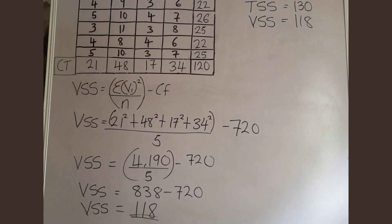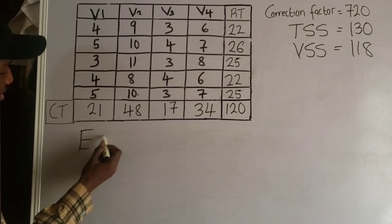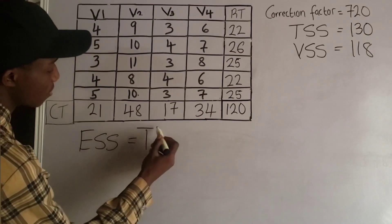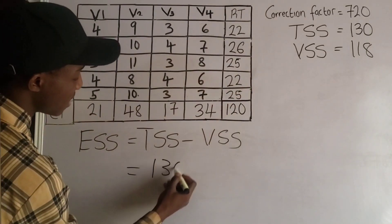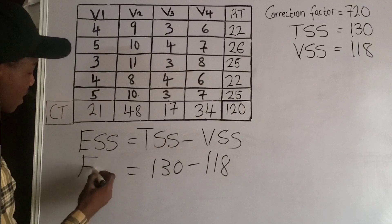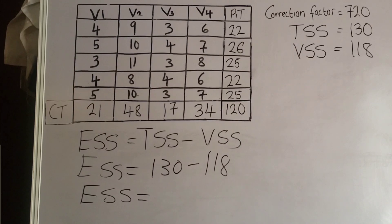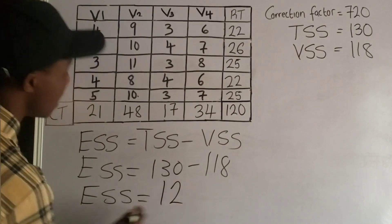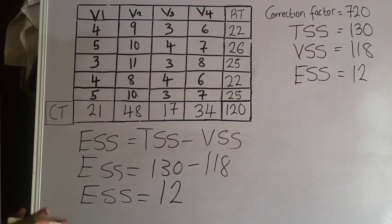After getting the variety sum of squares, the next thing is to get the error sum of squares. The error sum of squares is obtained by subtracting the variety sum of squares from the total sum of squares. So error SS = TSS - VSS = 130 - 118 = 12. So the error sum of squares is 12.